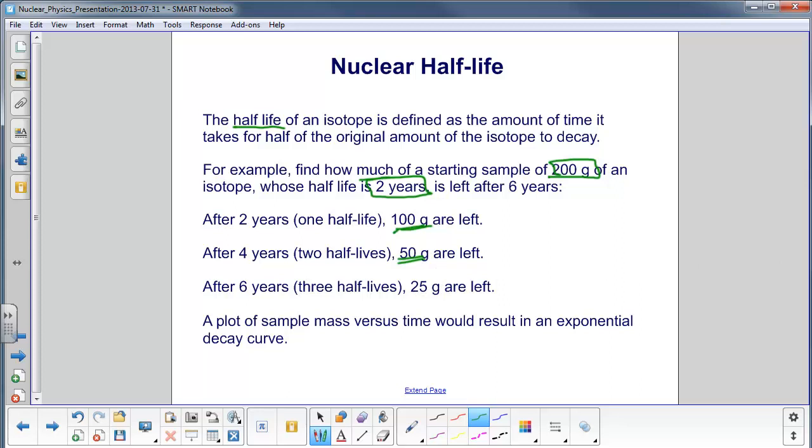So the answer is, after six years, three half-lives have gone by. Each time you cut this in half, so it went from 200 to 100 to 50 to 25, and you have 25 grams left of this radioactive isotope.